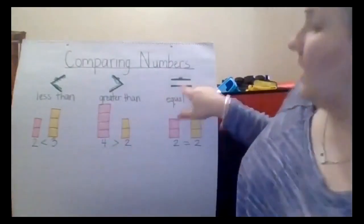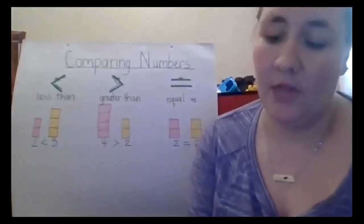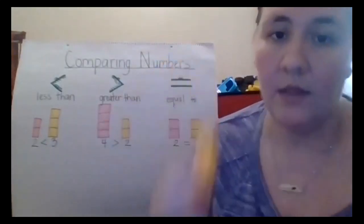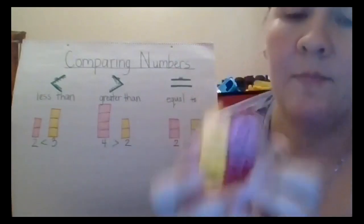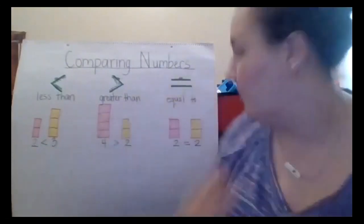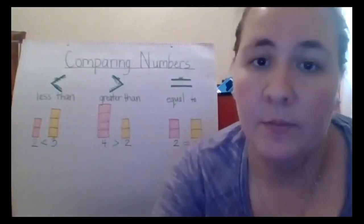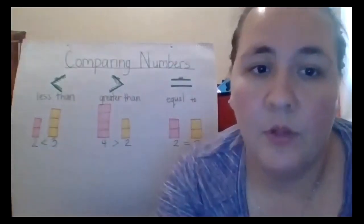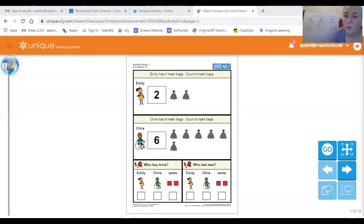Now this alligator is so confused — he doesn't know which way to open his mouth because we have the same number on both sides. We have two yellow and two red. If I put these together, you can see they're exactly the same, right? They're the same size or the same number. So my alligator mouth does not know which way to go, so he has his mouth at an equal sign. This is what we were working on before we went on break. Miss Daly is going to pull up your unique program and we are going to practice our counting and comparing.